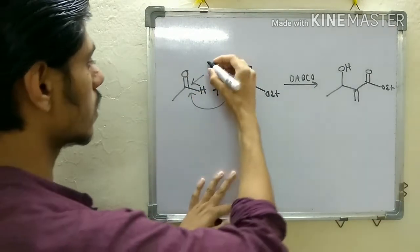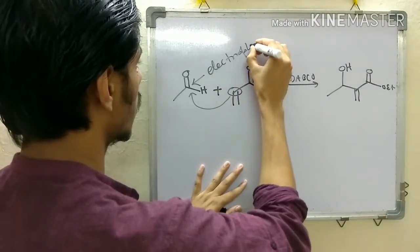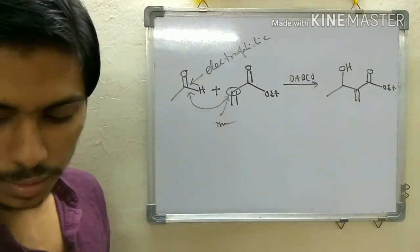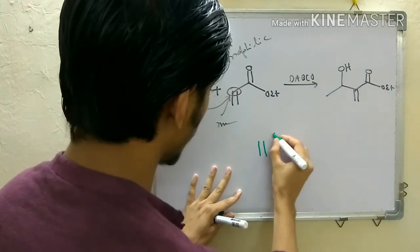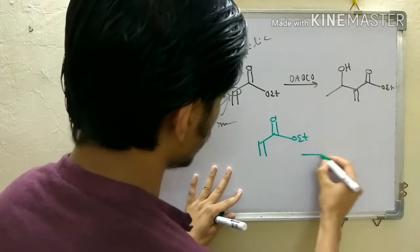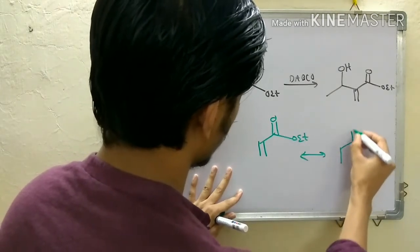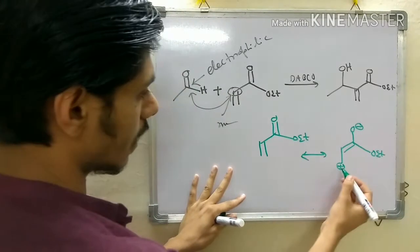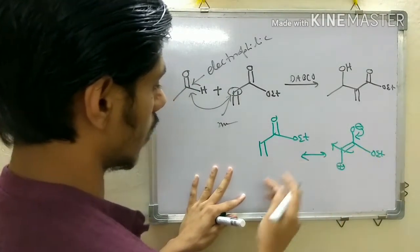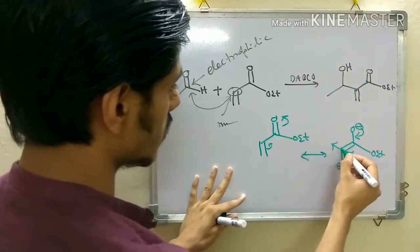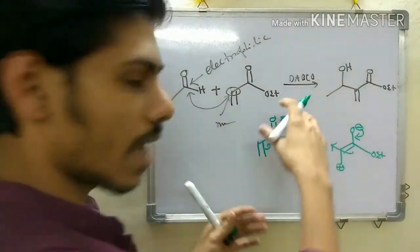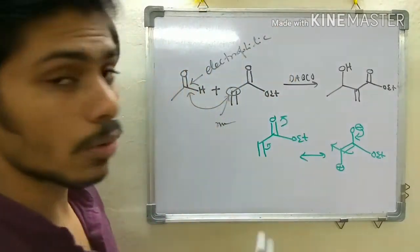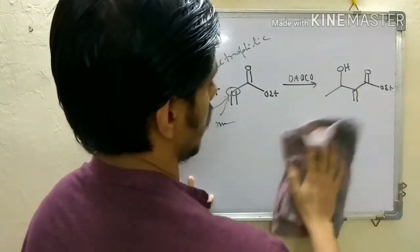The electrophilic center and the nucleophilic center can be understood by examining the resonance structure of ethyl acrylate carefully. There is a positive charge at the carbonyl carbon and a negative charge at the beta carbon, so this beta carbon is actually a nucleophilic center. In this reaction, the nucleophilicity of this particular center is used.